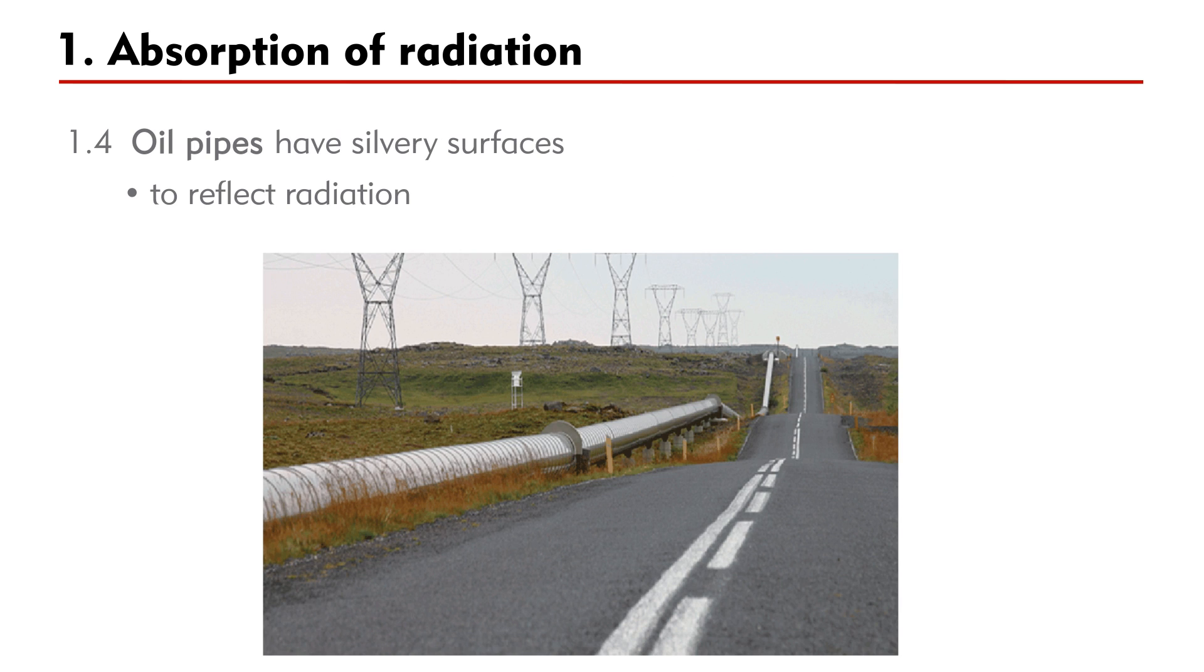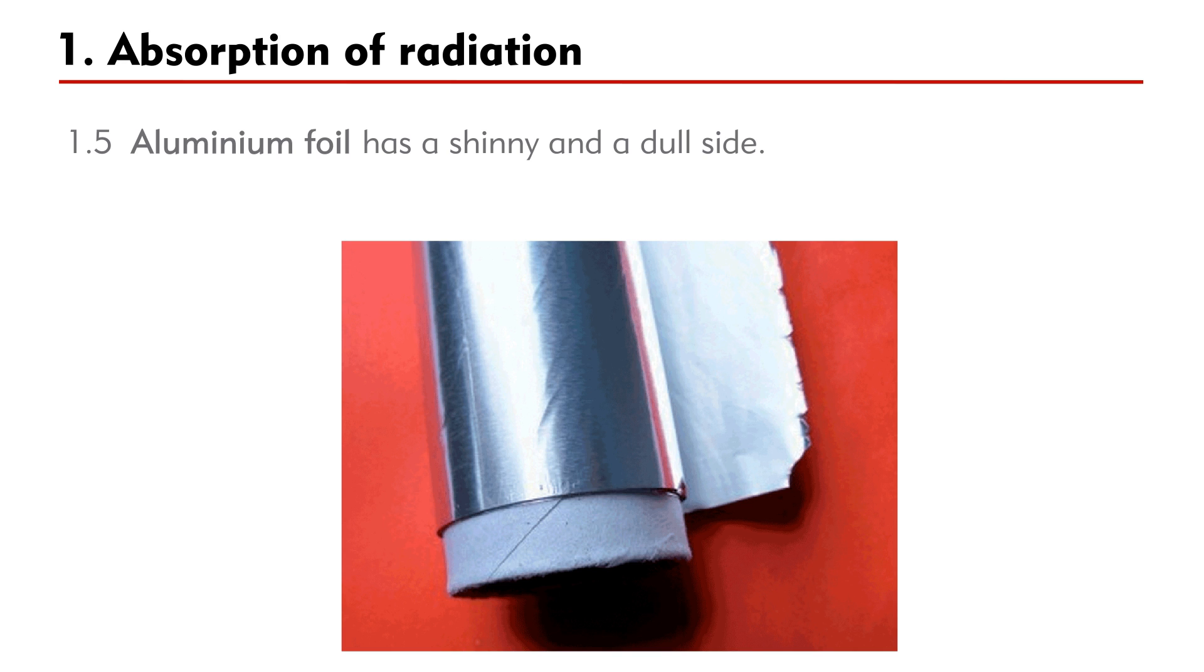Fourthly, oil pipes have silvery surface to reflect radiation. Finally, aluminum foil has a shiny and a dull side. For faster cooking, food should be wrapped with the dull side facing out.